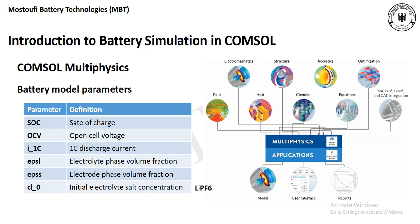For the first simulation, we need to define some parameters. In this introduction section we're going to define parameters like the SOC, which is the state of charge; the OCV, which is the open cell voltage; the I1C rate, which is the 1C discharge current — the current used for the battery at a discharge rate of 1C; and EPSL, which is the electrolyte phase volume fraction.